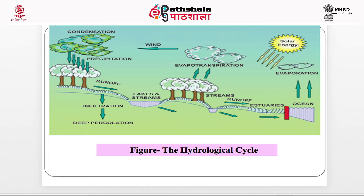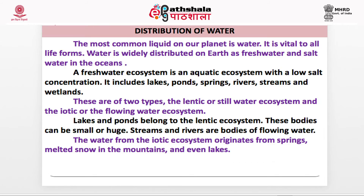In the hydrological cycle, water from the ocean evaporates to the atmosphere in the presence of solar energy. Plants also contribute through transpiration during daytime. Wind drives condensation and precipitation in the form of ice or rain. Water then runs off to lakes and streams, with some undergoing infiltration and deep percolation. Through streams and runoff, water returns to the ocean, continuing this chain known as the hydrological cycle.